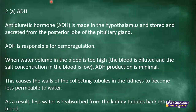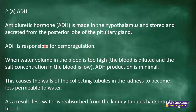ADH — antidiuretic hormone — is made in the hypothalamus and stored and secreted from the posterior lobe of the pituitary gland. ADH is responsible for osmoregulation. When water volume in the blood is too high, the blood is diluted and the salt concentration is low. Then ADH production will be minimal. This causes the walls of the collecting tubules in the kidneys to become less permeable to water, so less water will be reabsorbed from the kidney tubules back into the blood.